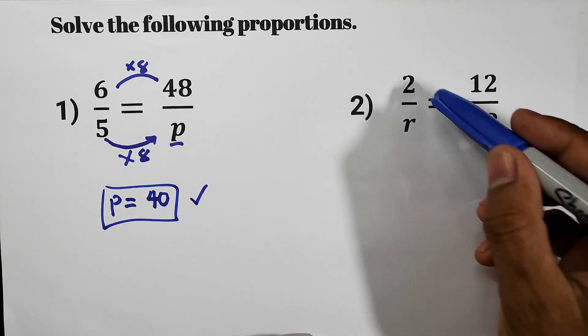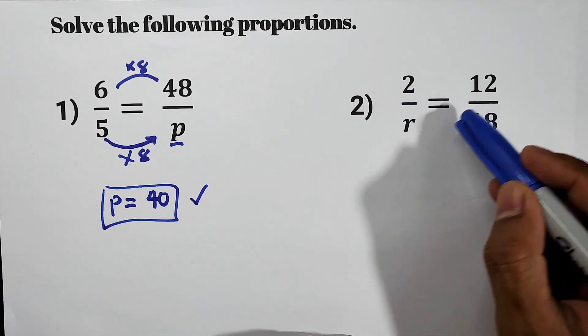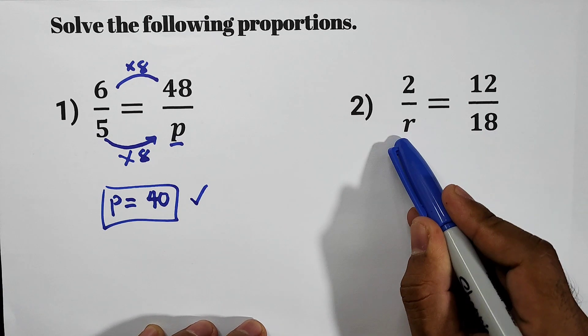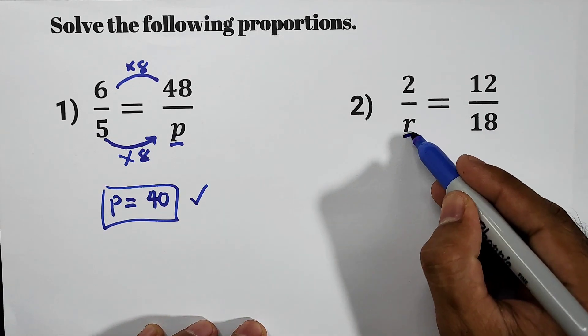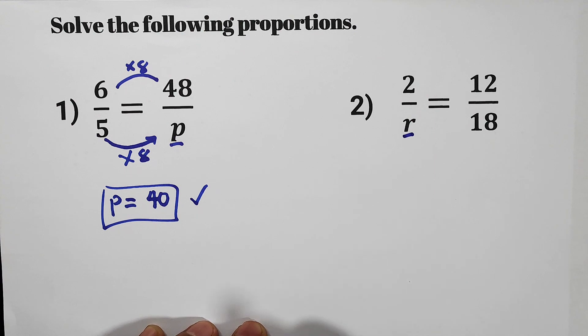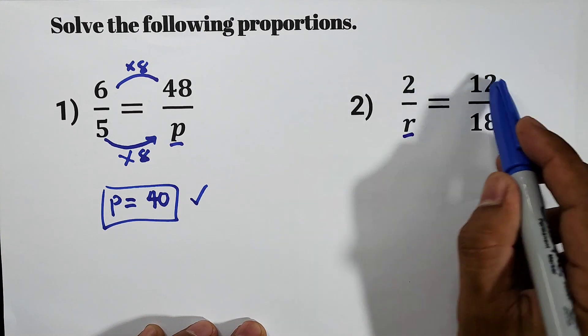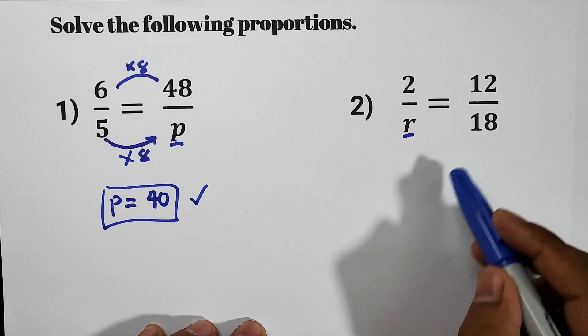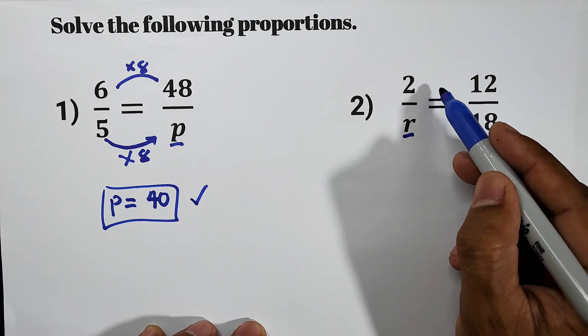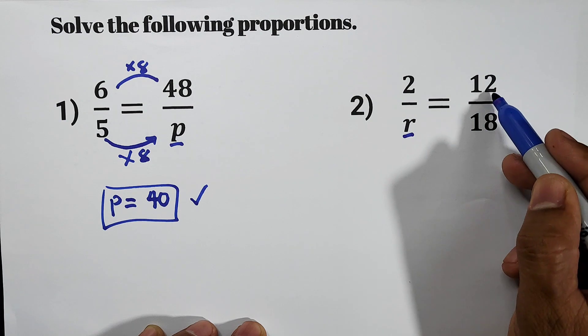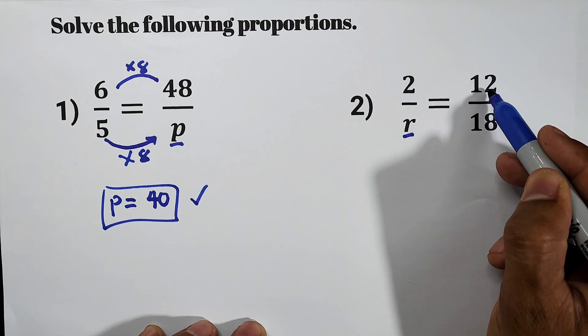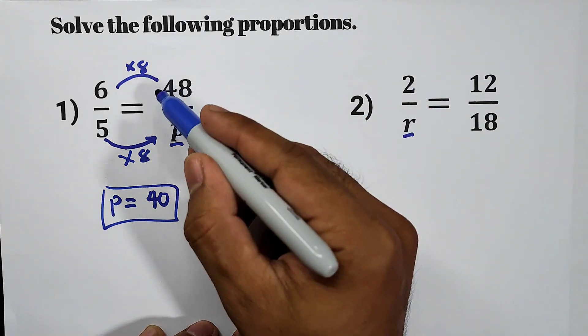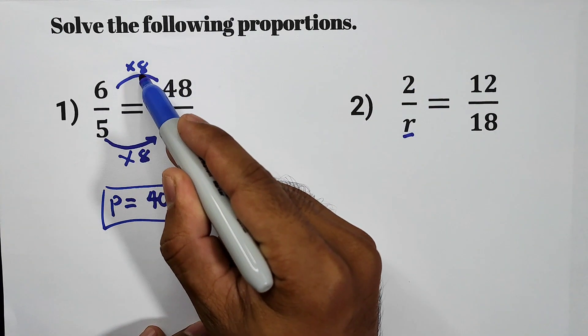We have 2 over R and then 12 over 18. Now the missing or unknown is R. So the relationship of the given numerators will affect the relationship of the denominator. So what you do to 2 to make it 12? Or what you do to 12 to make it 2? Vice versa.